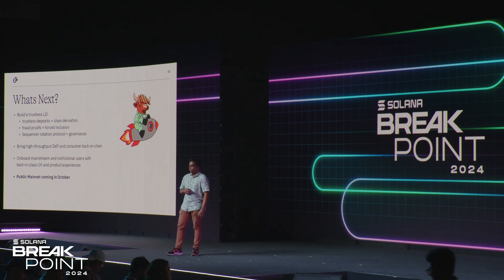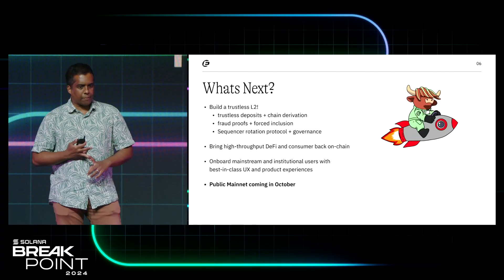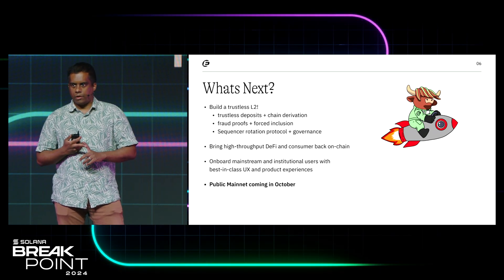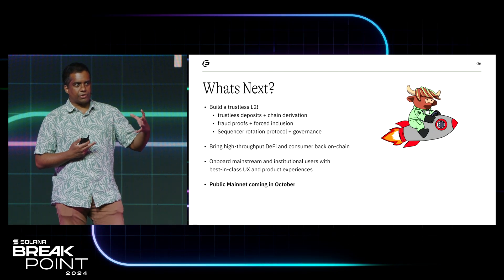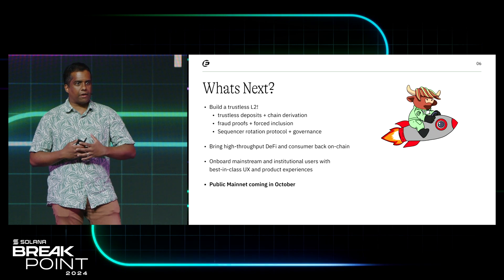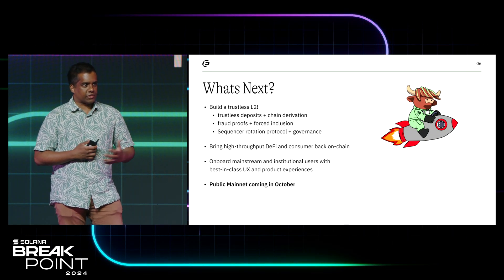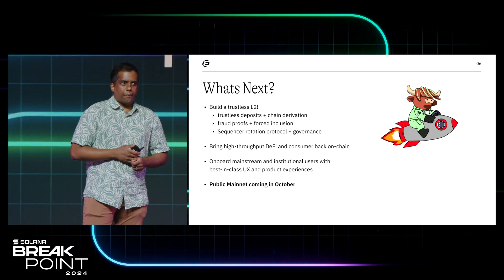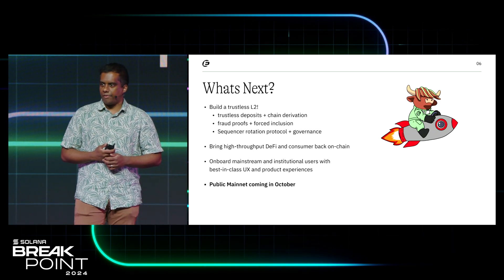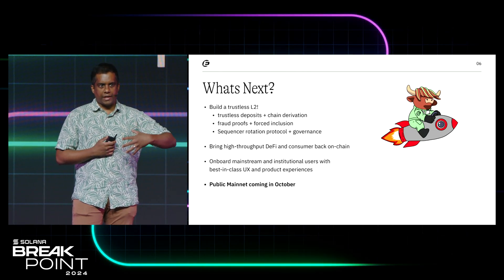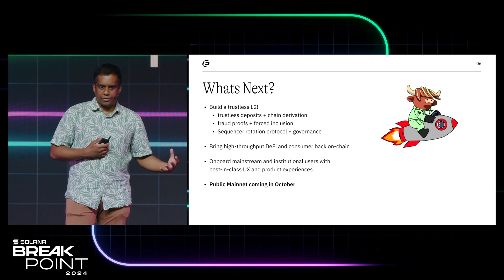What's next? We take the bar for L2s on Ethereum extremely seriously. As part of the road to building a trustless L2, the next roadmap features are trustless deposits with chain derivation, fraud proofs with forced inclusion, and a sequencer rotation protocol with governance. Eclipse as an L2 can really lean into a much higher TPS — potentially even higher than Solana L1 over the long term — and working with a single rotating sequencer, or what we call thick or beefy sequencers, is a way to achieve this. Our vision is to bring high-throughput DeFi and consumer apps back on-chain for Ethereum users and assets.